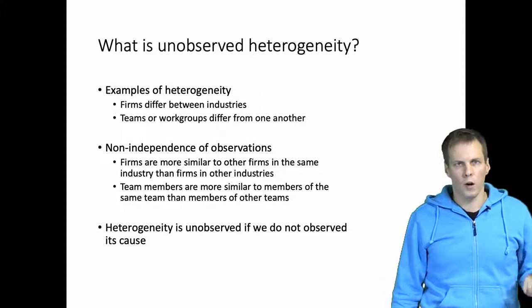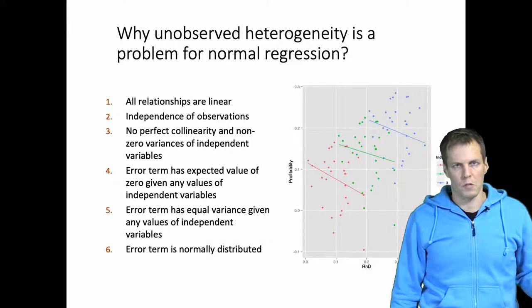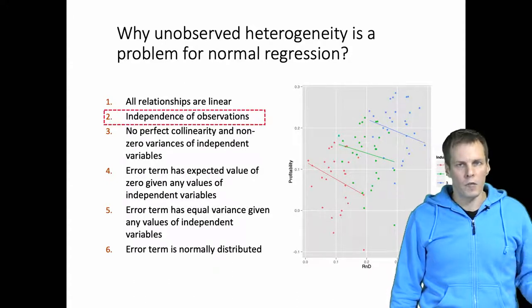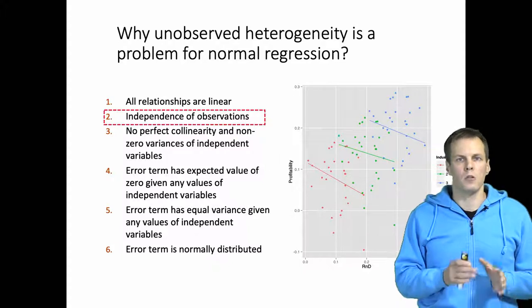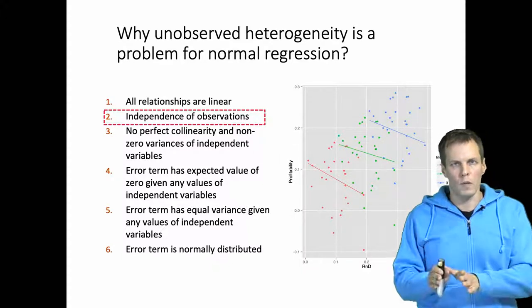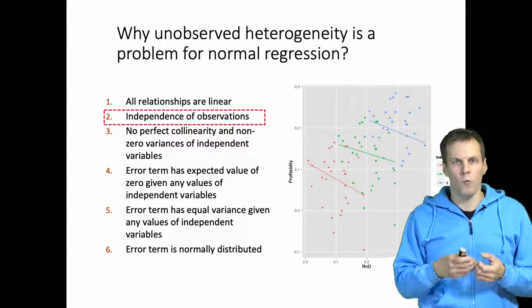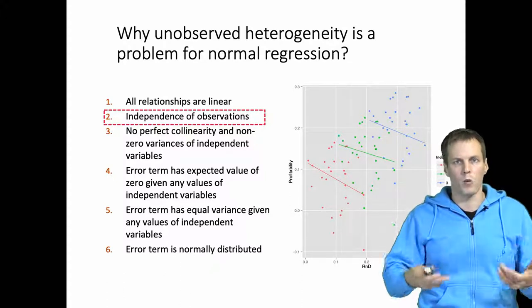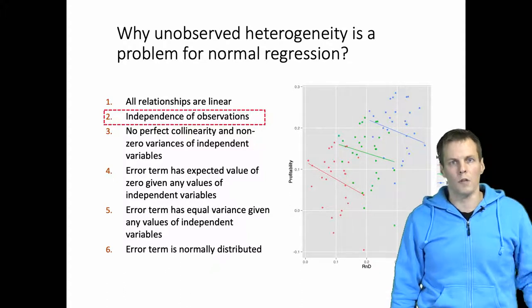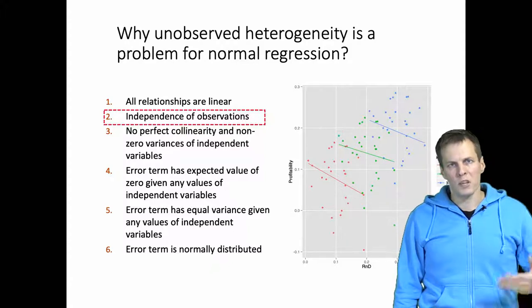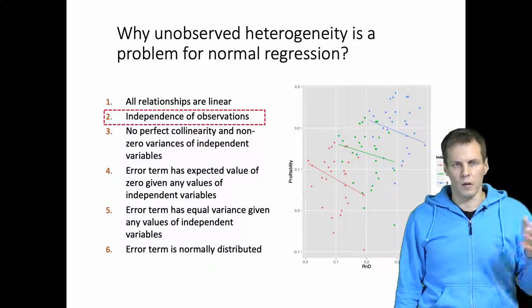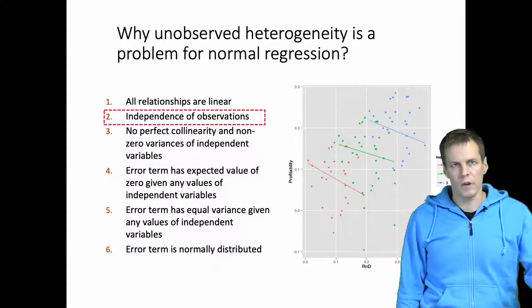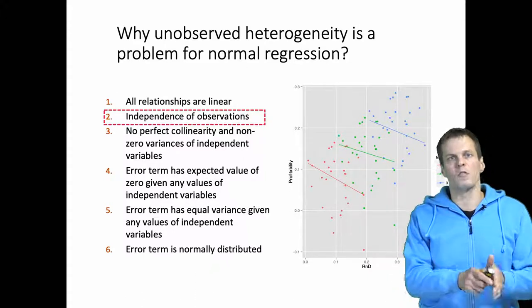What is the impact of unobserved heterogeneity on rigorous analysis? First, we are in violation of independence of observations. Because heterogeneity is unobserved, it must be accounted for by the error term, since all unobserved influences go there. This makes the error terms non-independent, so that errors within one cluster are more similar to one another than errors between two clusters.